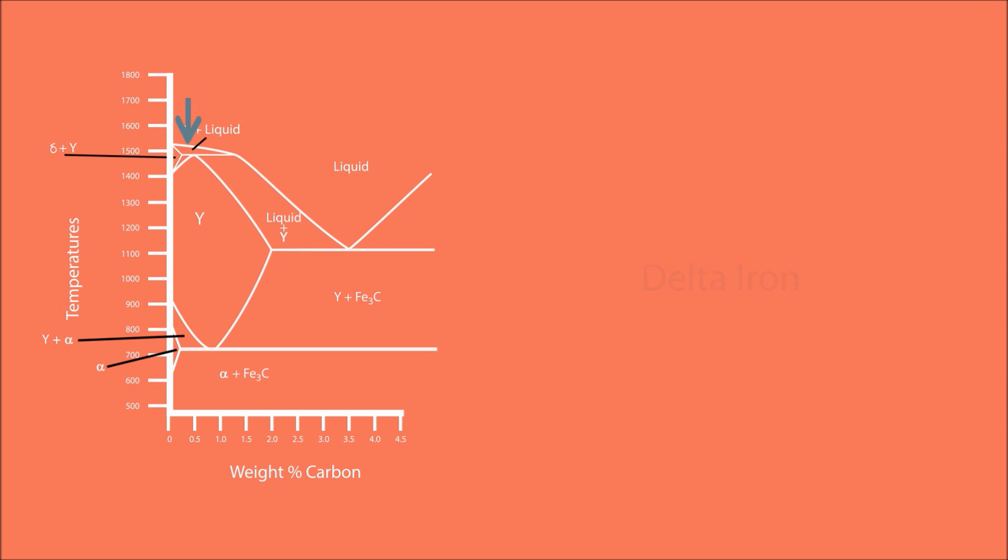From 1510 to 1495 degrees Celsius, the amount of delta iron increases while the amount of liquid decreases.